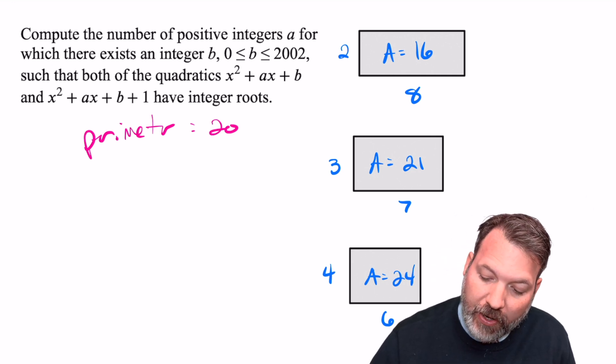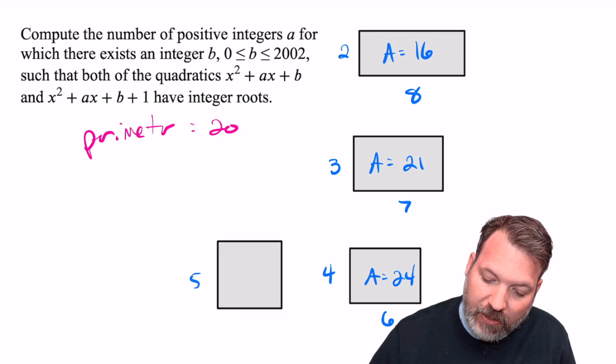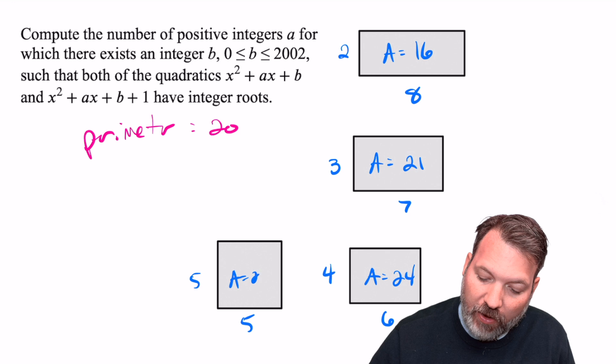And finally, if we actually go ahead and just make it a square, five by five square, that's going to give us our maximized area of 25.